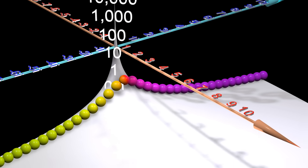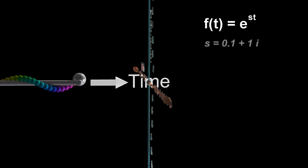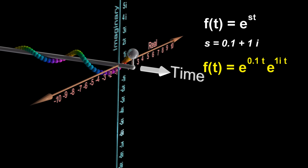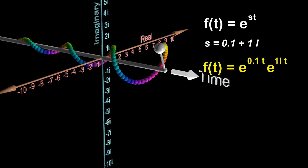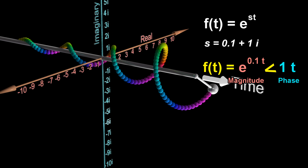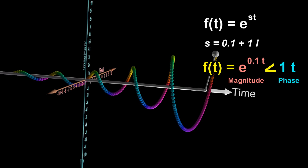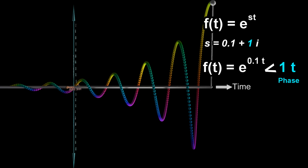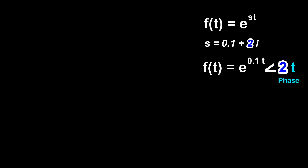There is a lot of beauty in this transformation, but to understand it, we need to first talk about the sums of exponentials of complex numbers. For functions of time, the variable S is always a constant. If we increase the imaginary component of S, the white line will rotate faster.